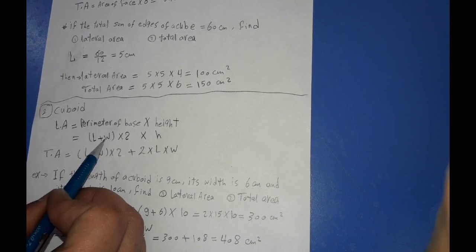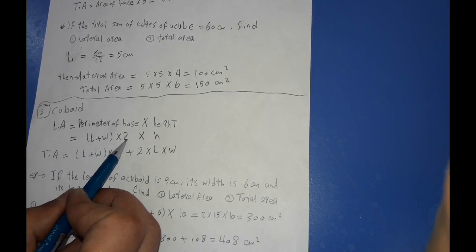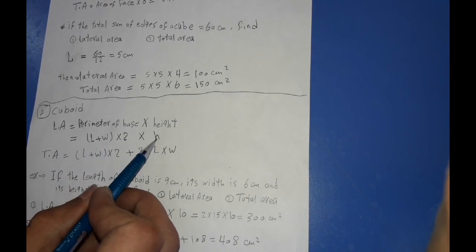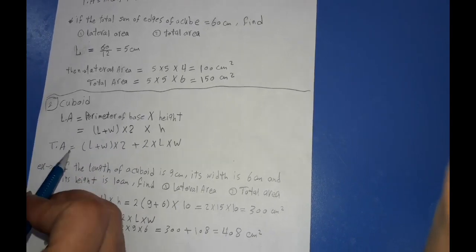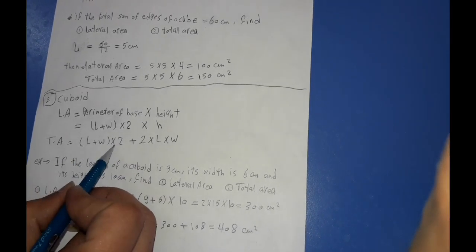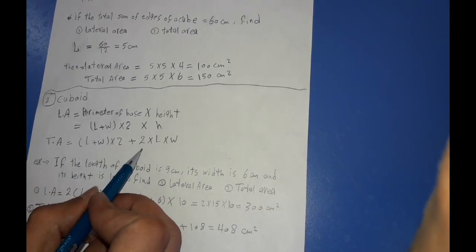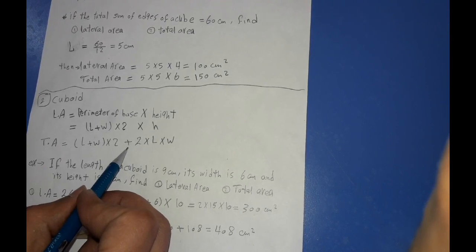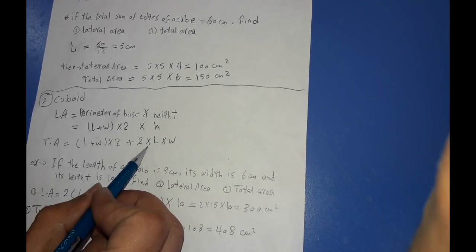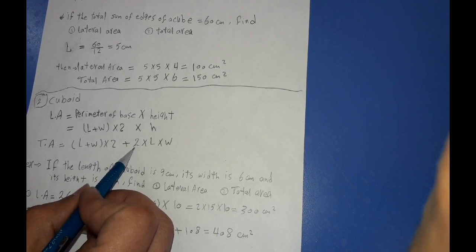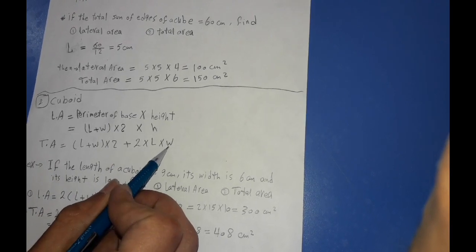Then the lateral area equals (length plus width) × 2 × height. And the total area equals (length plus width) × 2 × height, plus the area of the two bases, which we simplify as 2 × length × width.